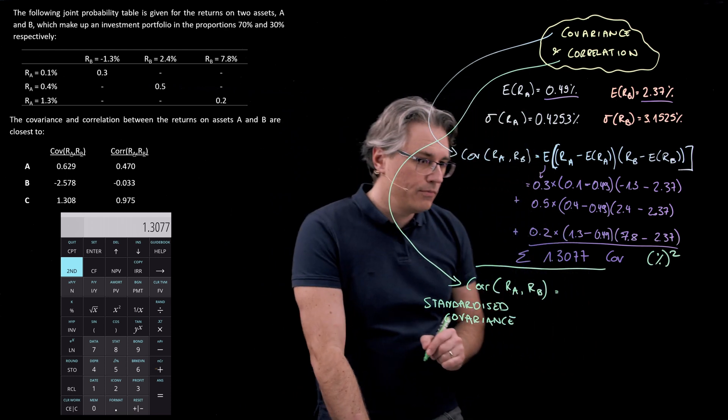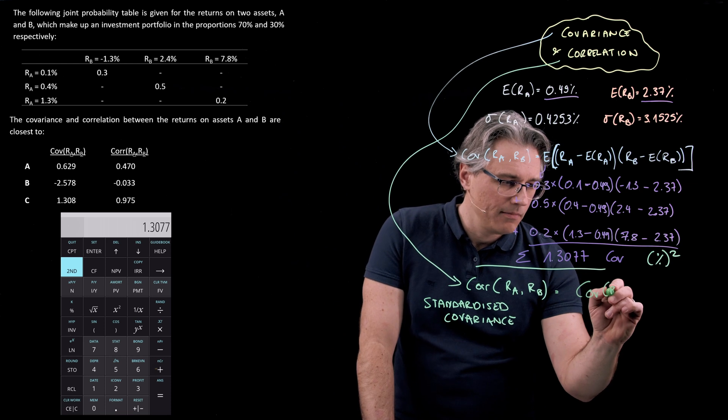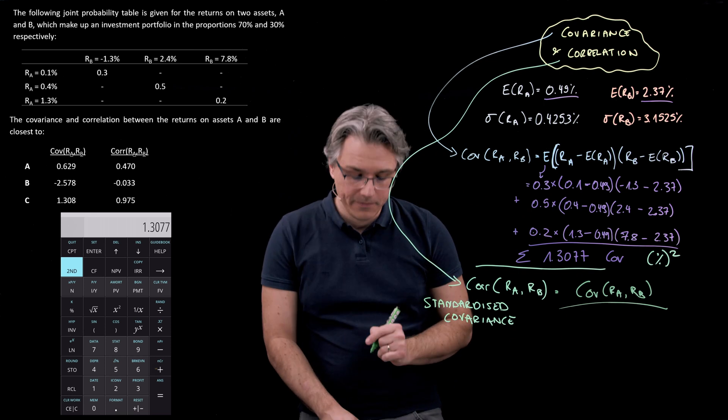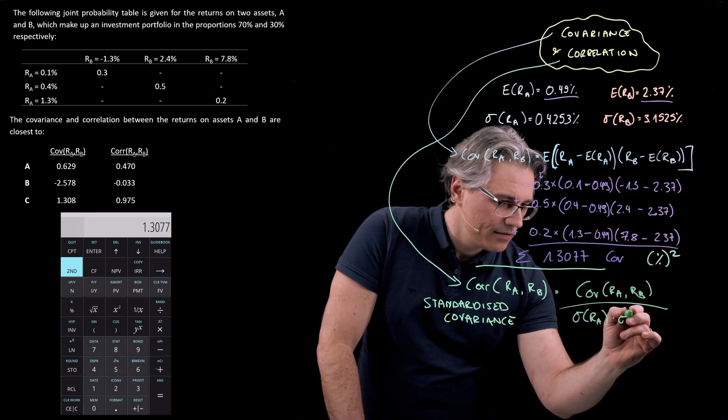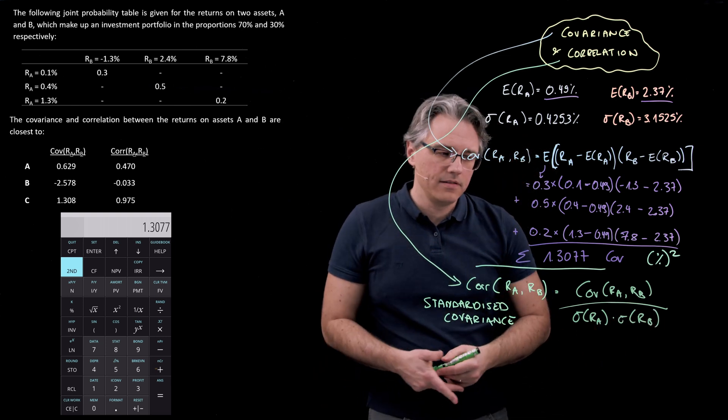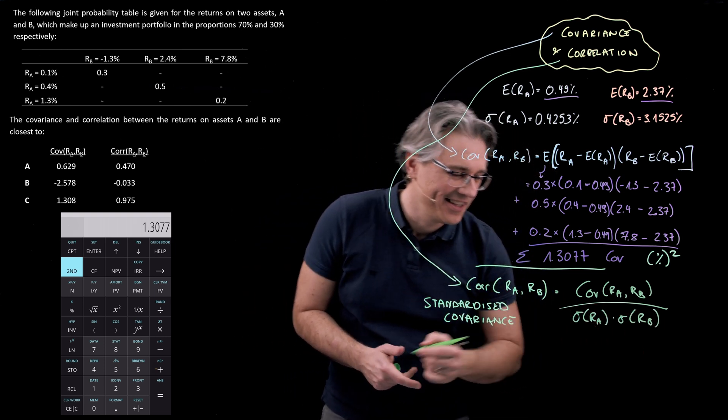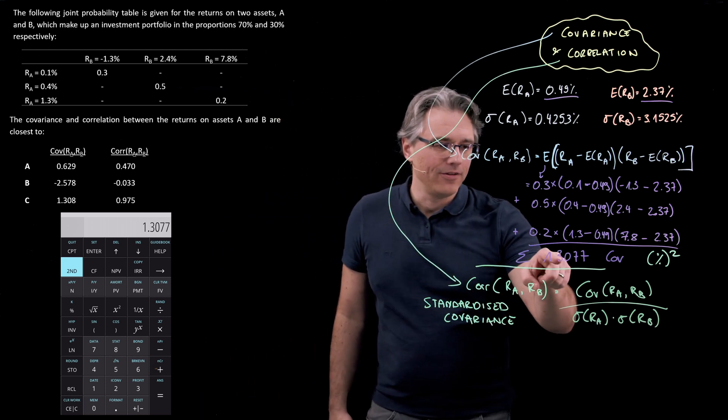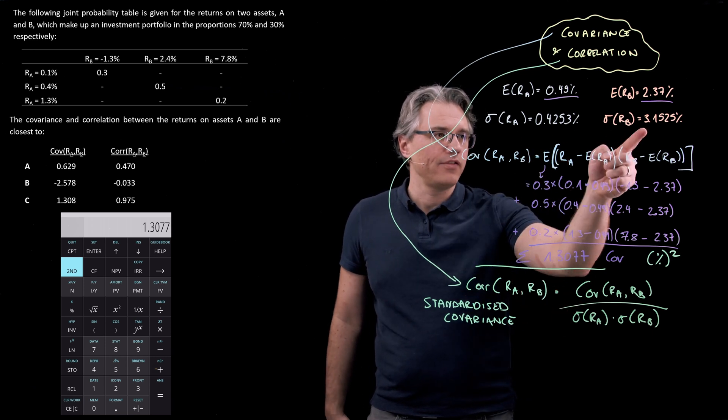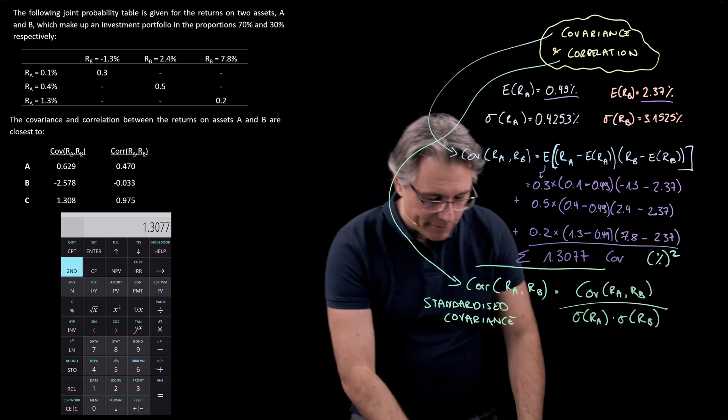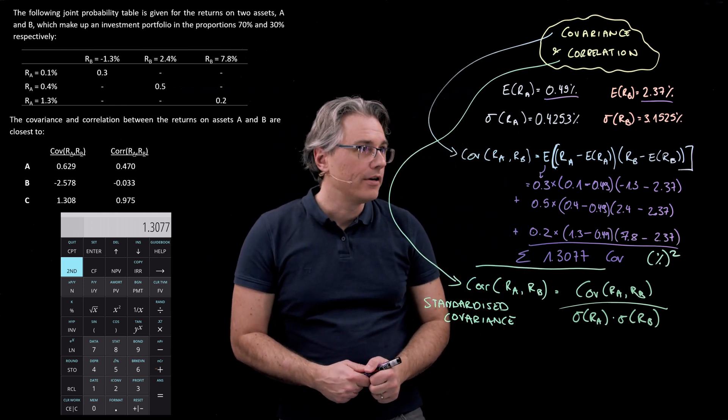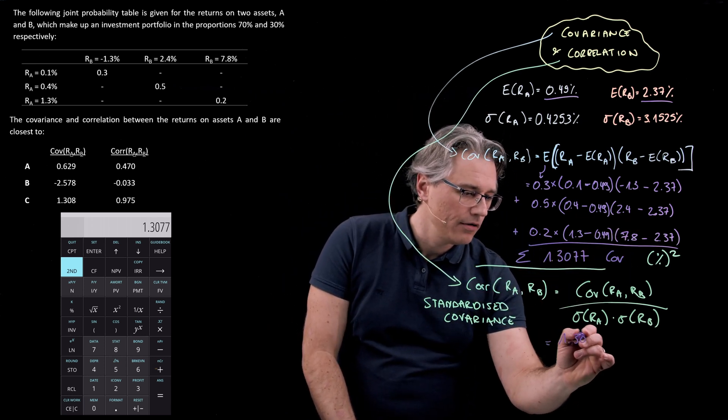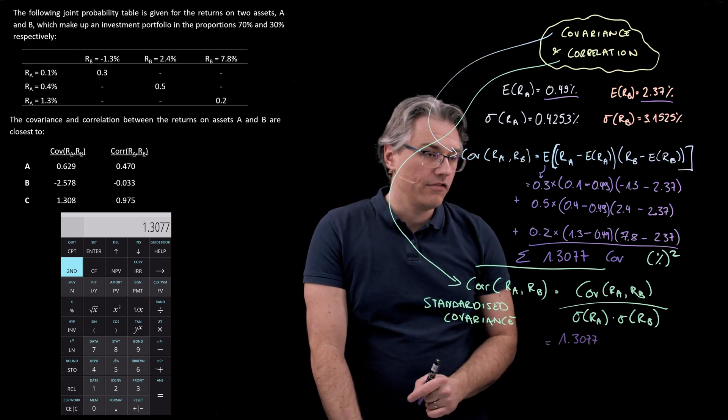Correlation is computed as the covariance between these two returns, A and B, divided by the standard deviation of A times the standard deviation of B. This is the standardization element. So a really simple computation, given that we've already got covariance over here and we've got the standard deviations computed in prior questions.